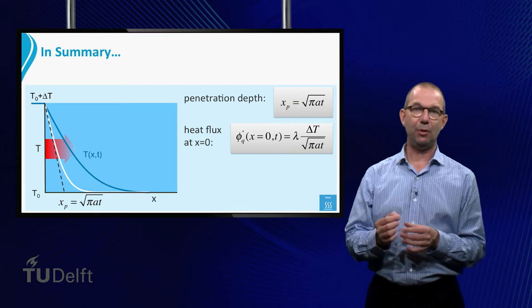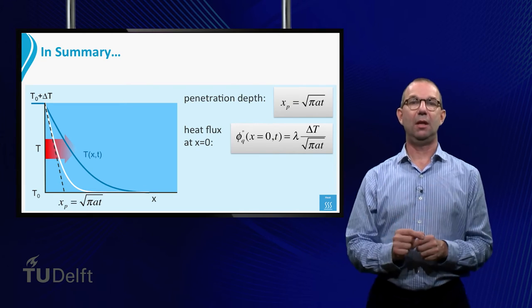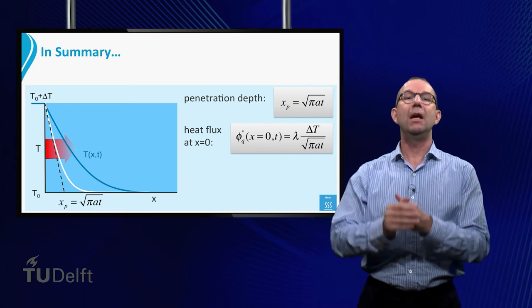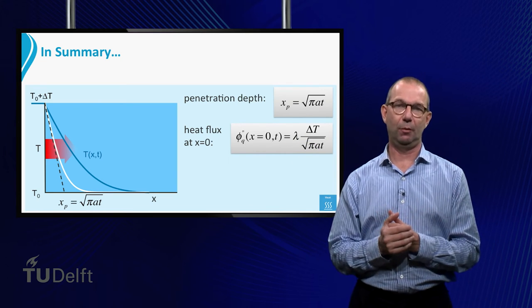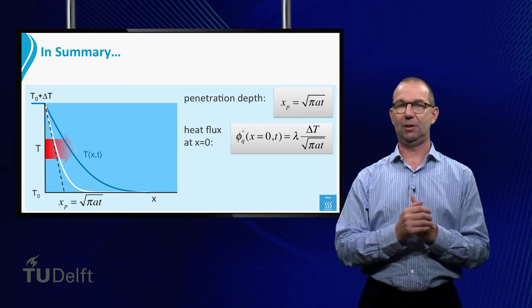The penetration depth is constructed such that the slope of the temperature at x equals zero is exactly given by the driving temperature difference over the penetration depth.